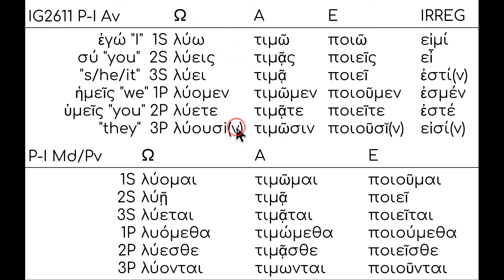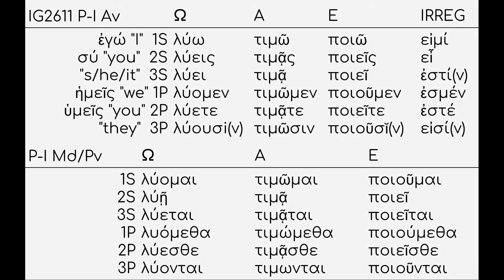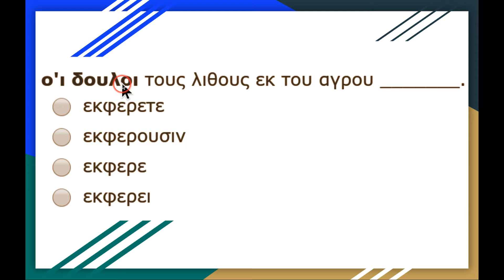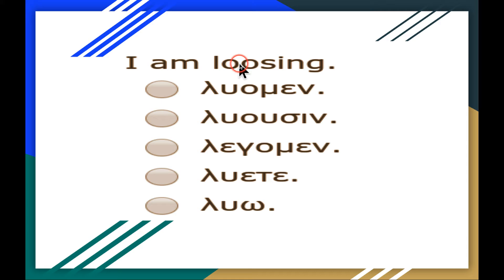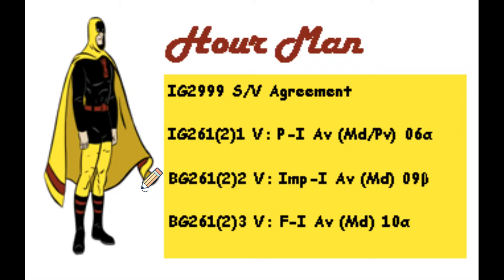These are the same verbs we learned in chapter two: luō, lueis, luei, luometha, luete, luousin. You do need to know the middle and their usages. Middle-passive: luomai — 'I loose for myself' or 'I am loosed.' Then: luei, luetai, luametha, luesthe, luontai. Notice the alpha and the epsilon — we'll ask you if it's an alpha contract or an epsilon contract, as they have different connecting vowels.